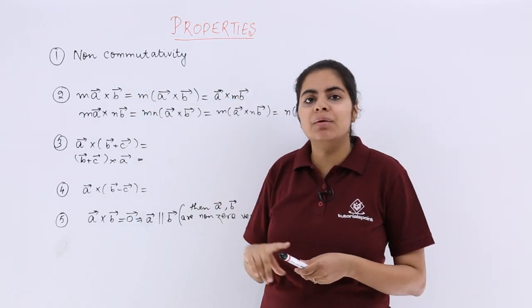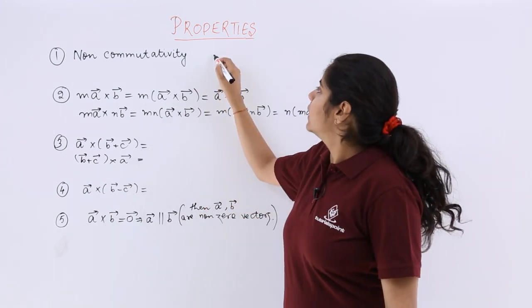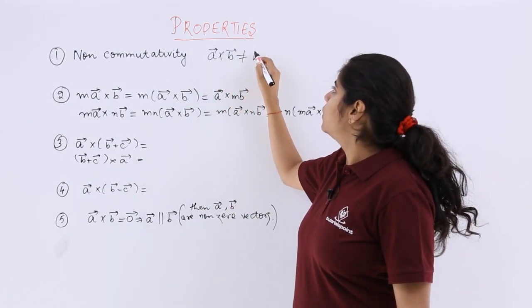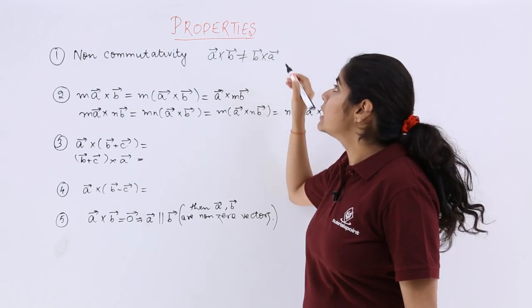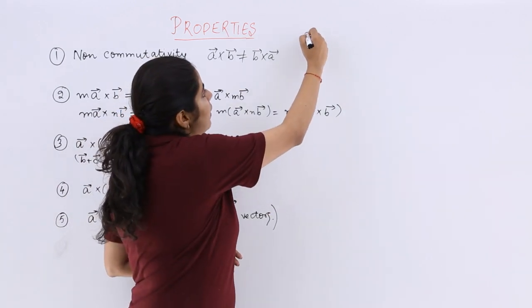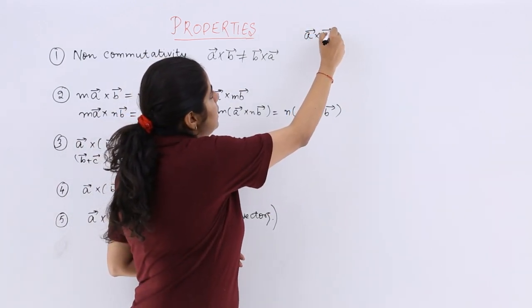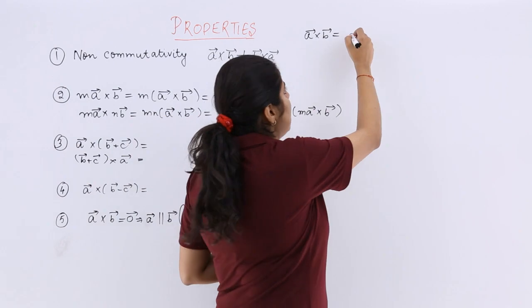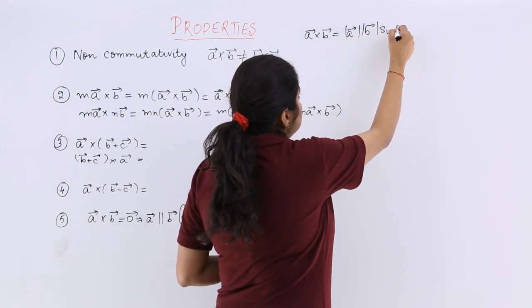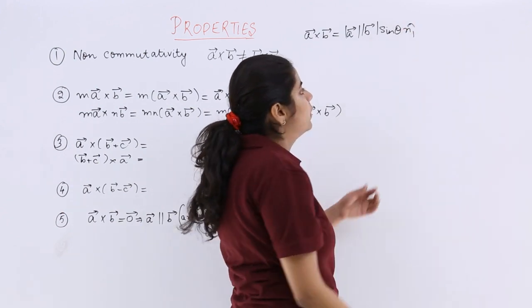So the first property is non-commutativity. That means definitely your a × b is not equal to b × a. This is non-commutativity in case of vector product. Why? Because if I have to speak about a × b, that will be ab sin θ n₁ cap, a unit vector.